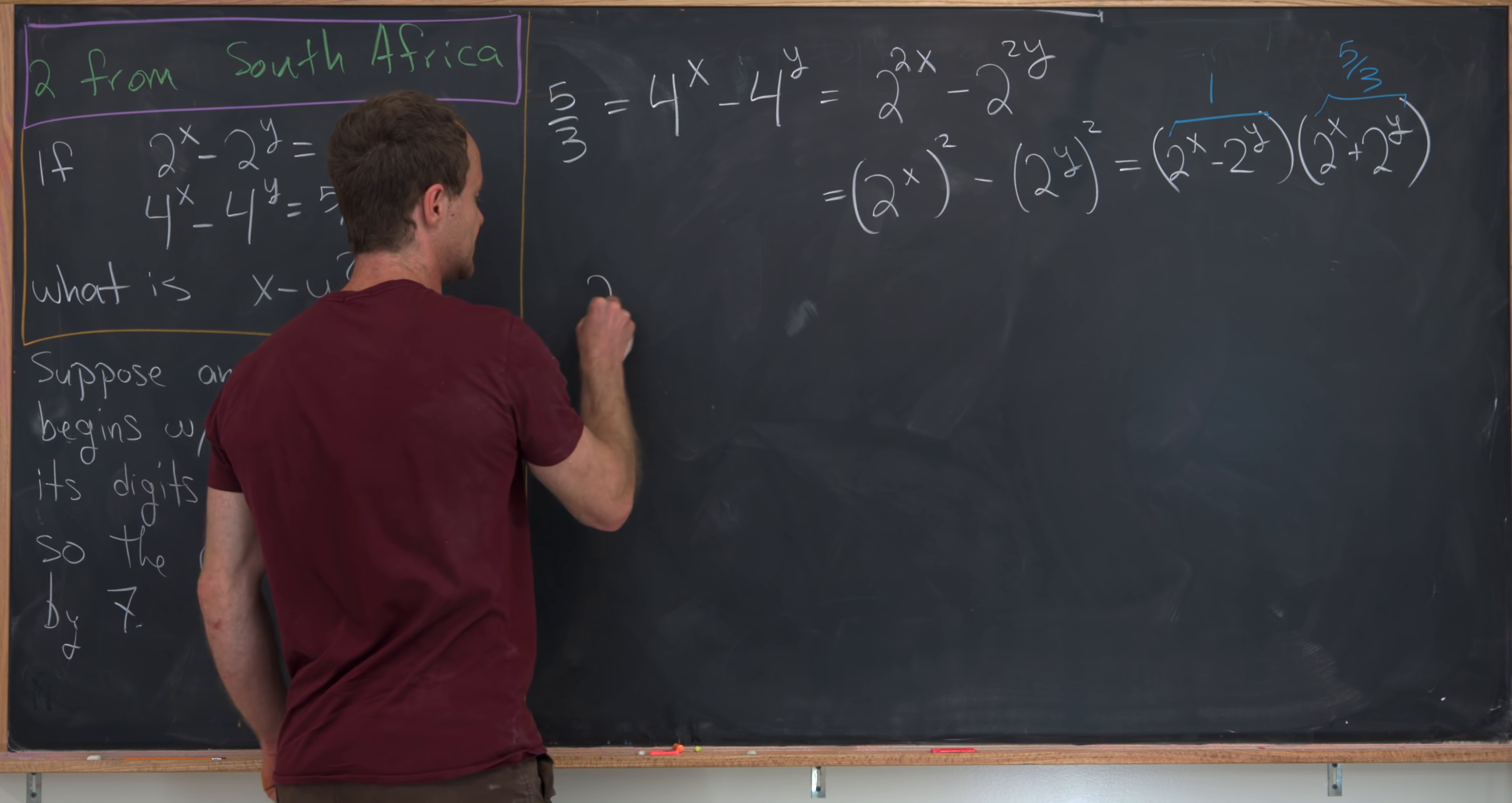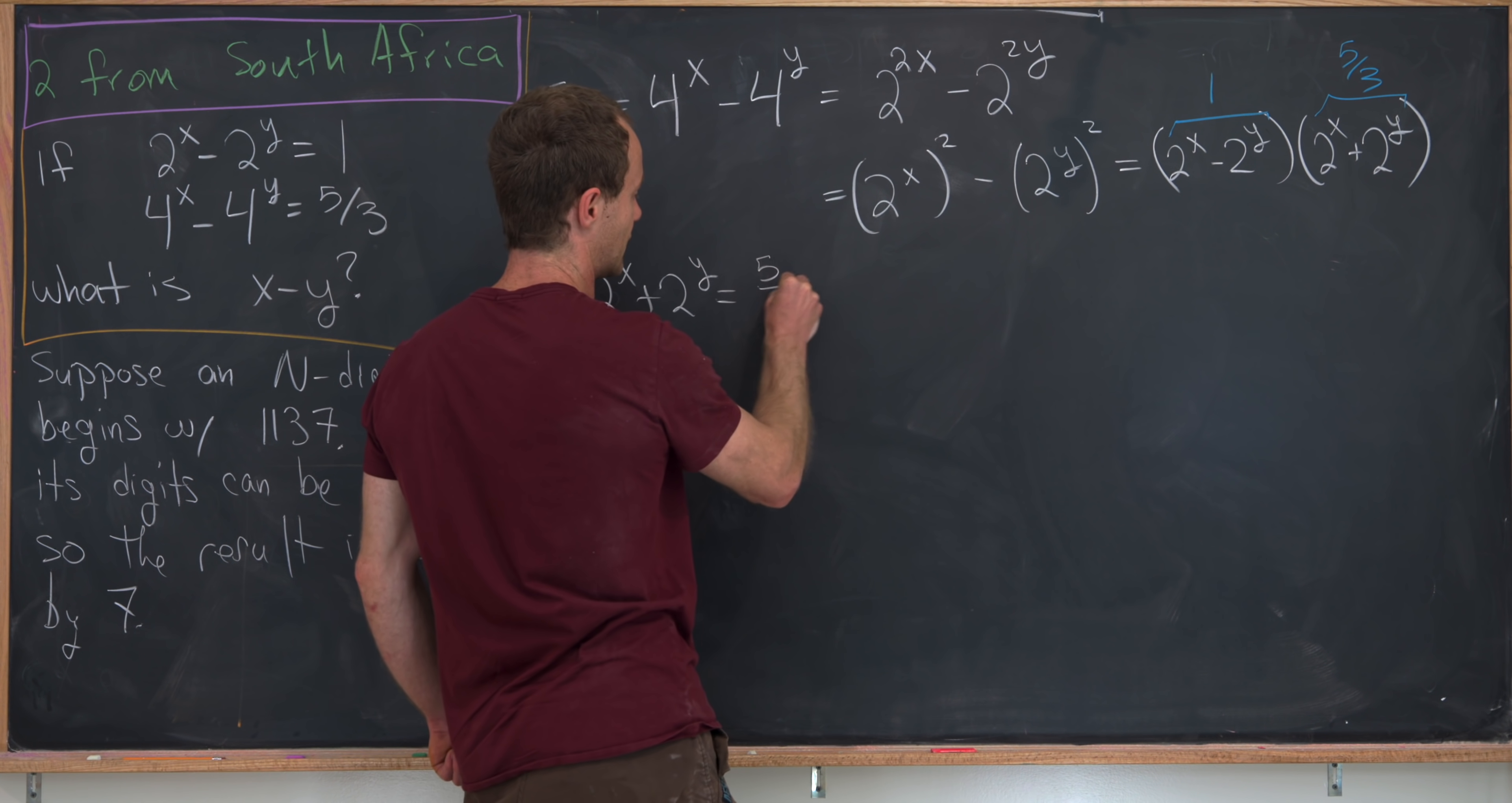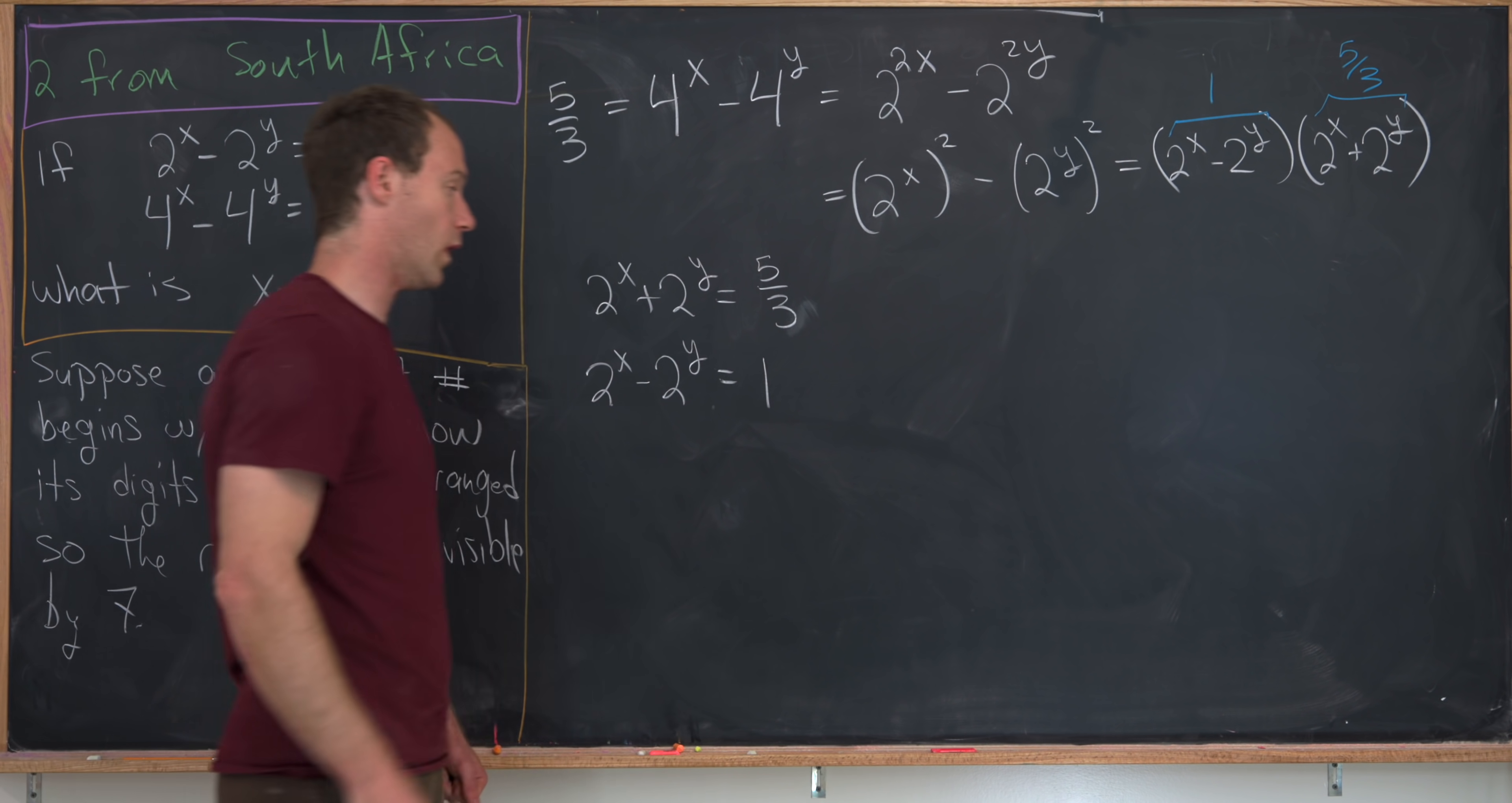And that is 2 to the x plus 2 to the y is equal to 5 over 3, and then 2 to the x minus 2 to the y is equal to 1.